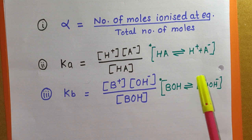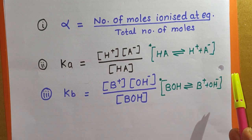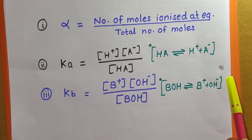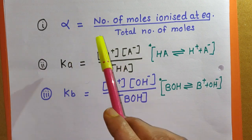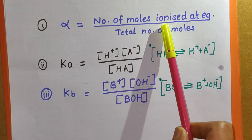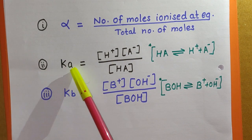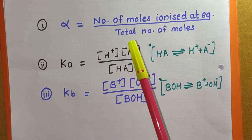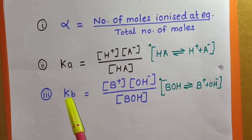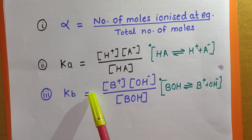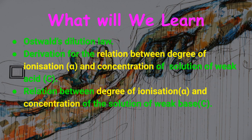In the last video we learned about the strength of acids and bases. Acids and bases are classified as strong acids, weak acids, strong bases, and weak bases. In this topic we concentrate on weak acids and weak bases. The extent of ionization is determined by the value of alpha, the degree of ionization, calculated as the number of moles ionized at equilibrium divided by total number of moles. The strength of acid and base can also be determined by the values of Ka and Kb.